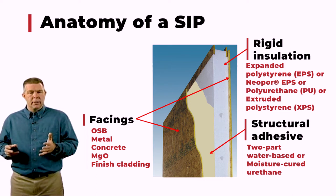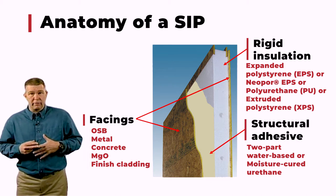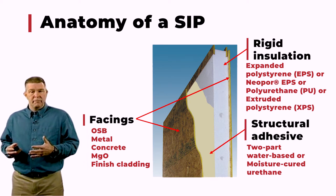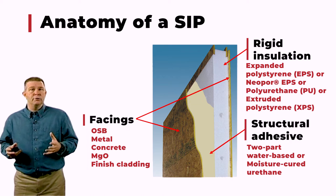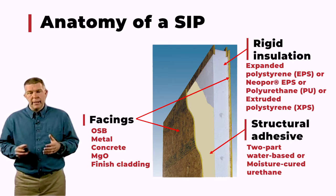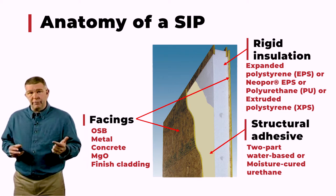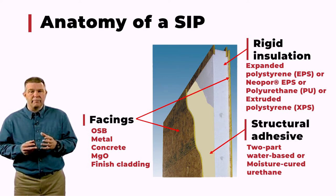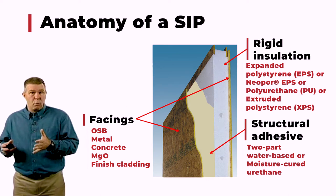Now let's talk about the cores. There are basically three different types of cores in the industry. Just as OSB makes up about 80% of the market for outside facings, EPS makes up about 80% of the panels in terms of the core. It's EPS — expanded polystyrene — that is used as the rigid foam between the two facings. Expanded polystyrene is the white foam. Most people may inadvertently refer to it as styrofoam, but in fact that white foam is expanded polystyrene.